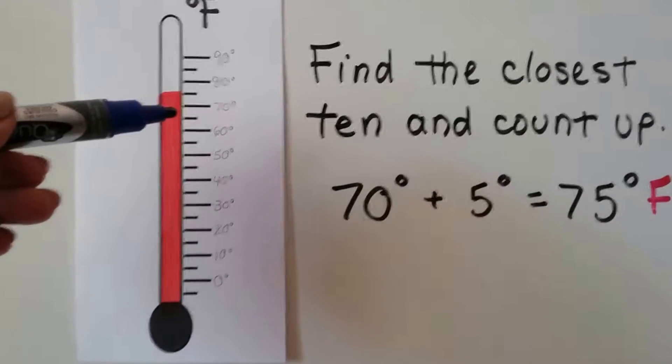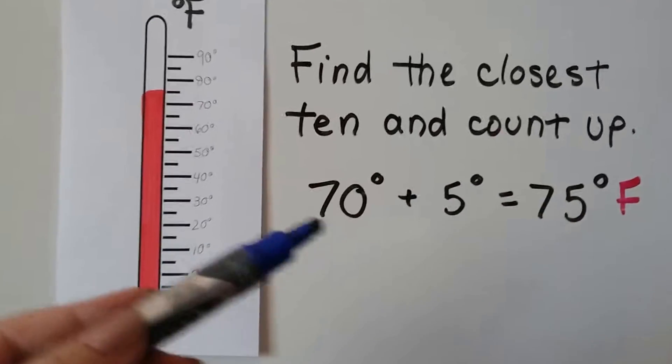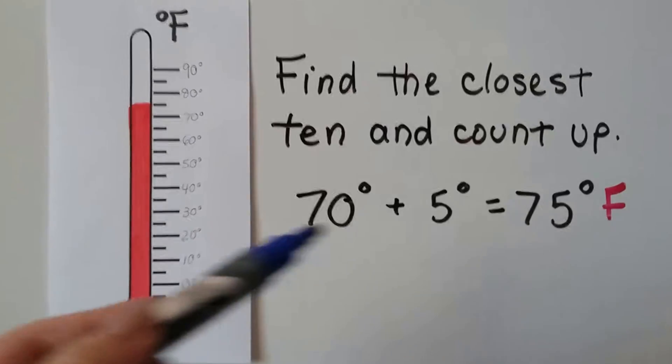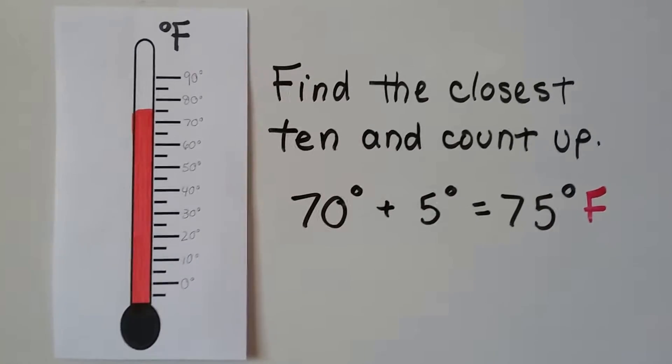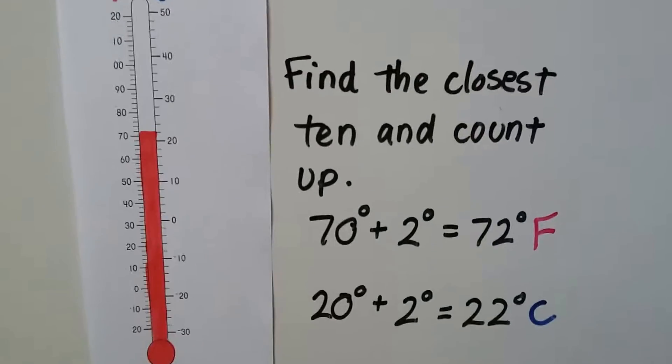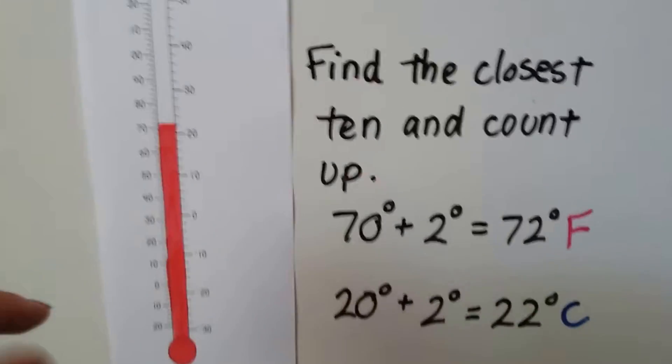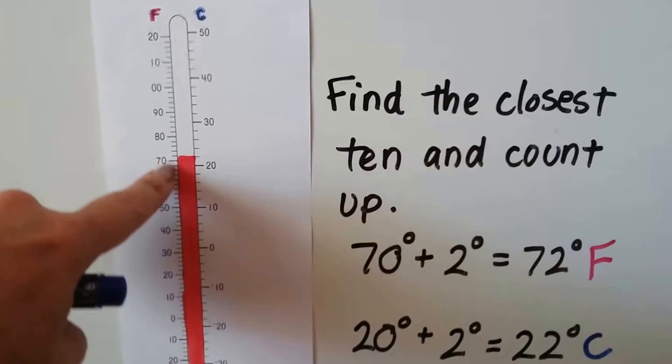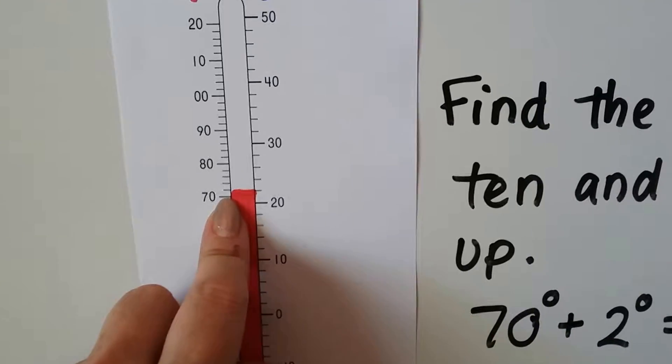So what we're doing is we find the closest 10 that it passed, and then we count up. This just passed the 70, and this is marked by fives. So we do 70 and 5 more. This is 75 degrees Fahrenheit, because we see the F up there. See that? We find the closest 10 that it just passed and count up.